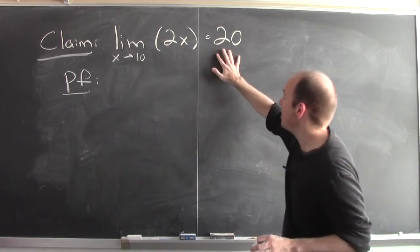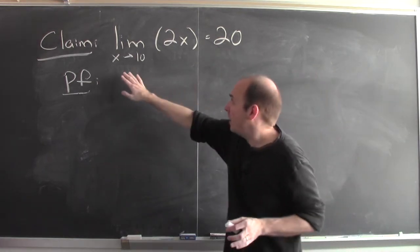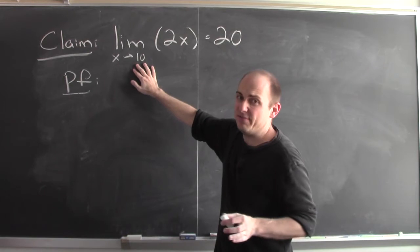You're going to demand that 2x be within epsilon of 20. I'm going to satisfy your demand by saying x is within some number delta of 10.